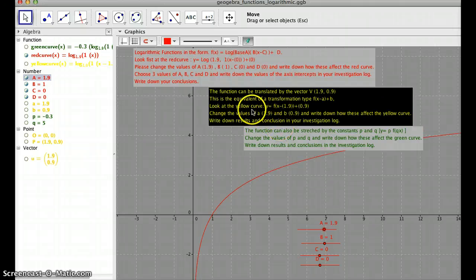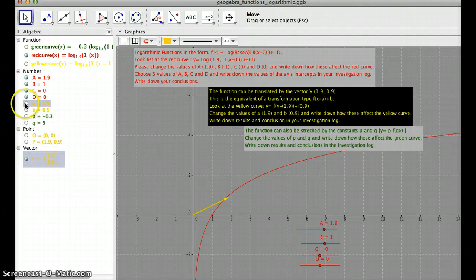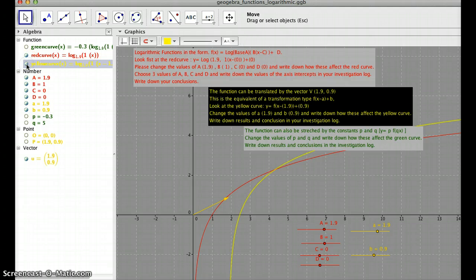Now, same thing for the yellow part. So we have a vector that has coordinates a and b, and this is how it gets translated. And this is the easy part. We can just see how it gets translated horizontally and vertically.